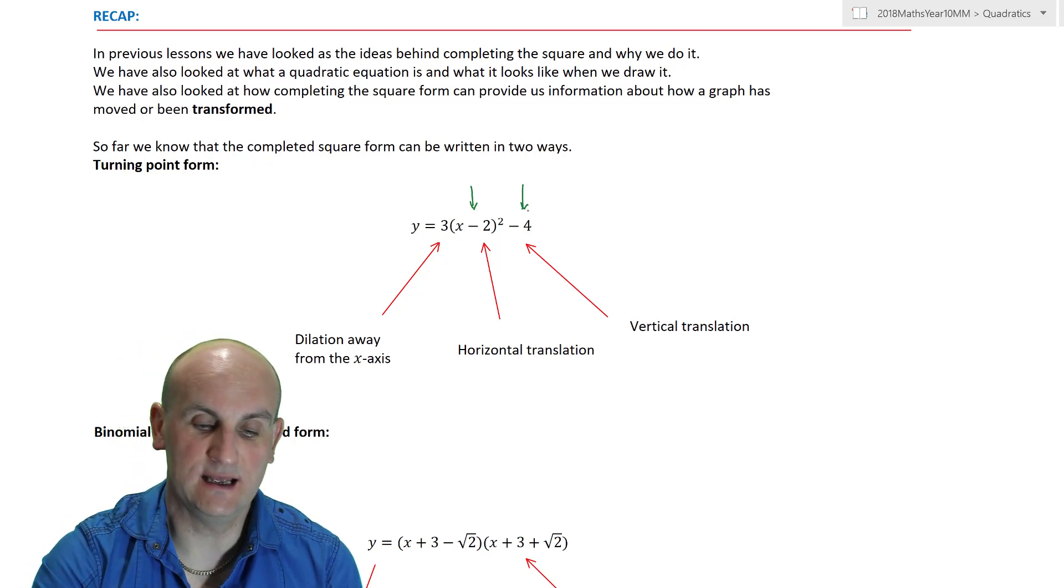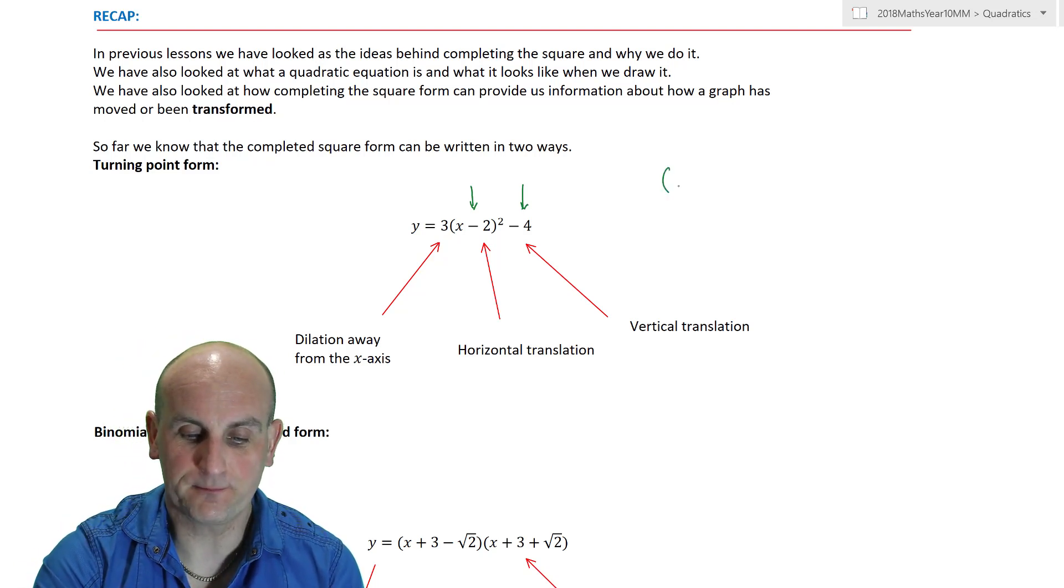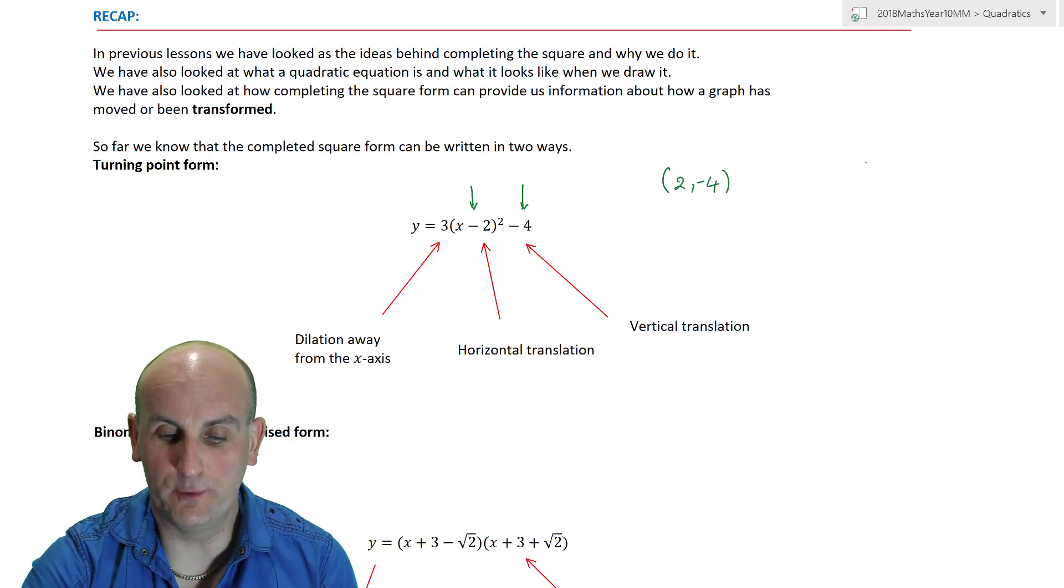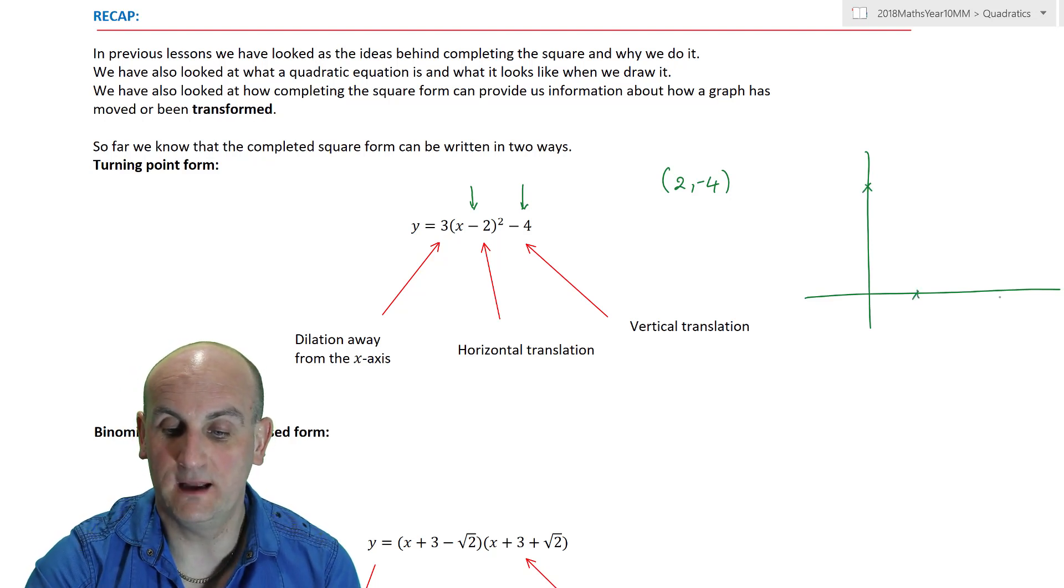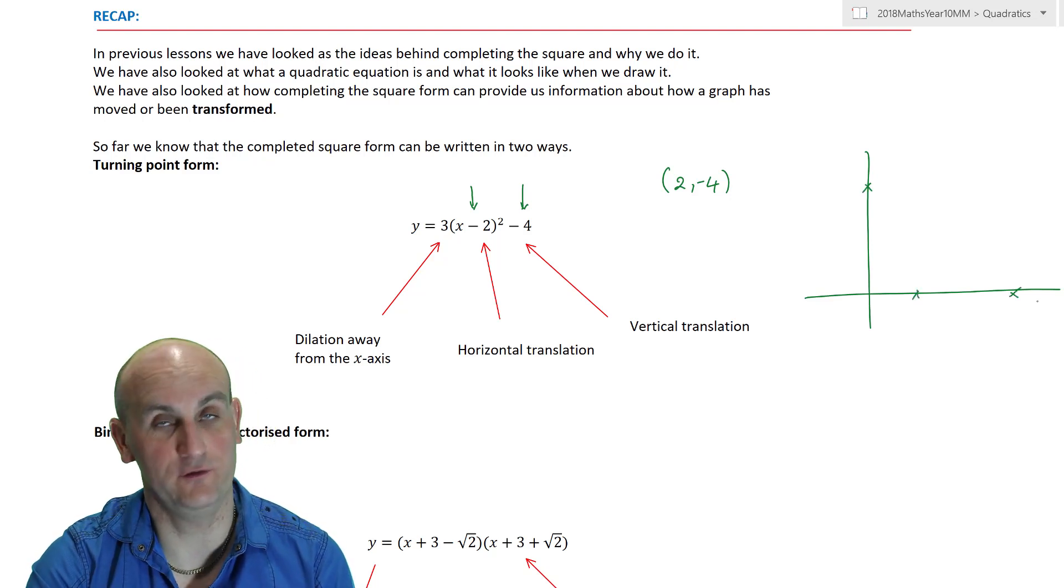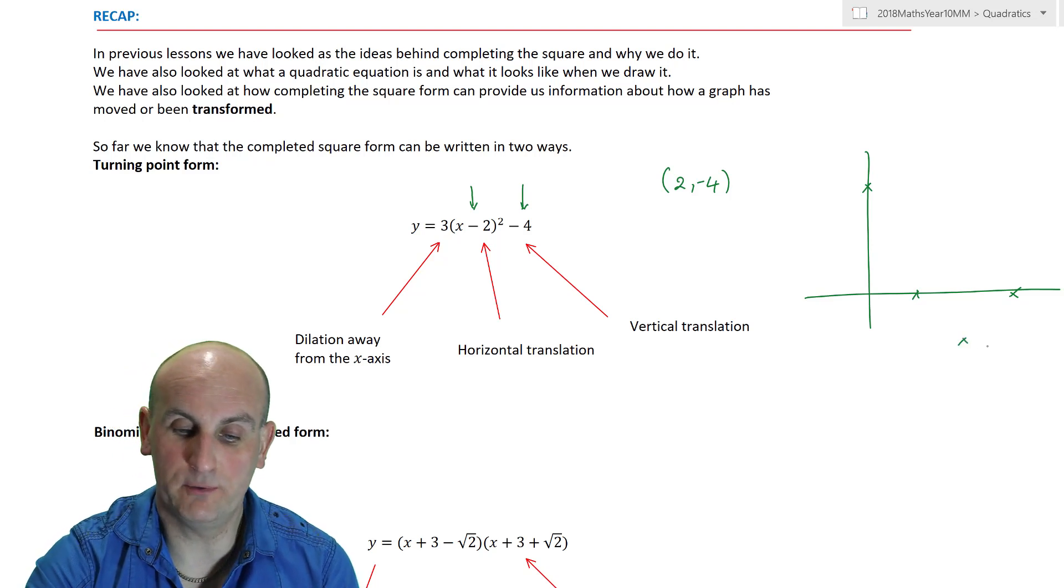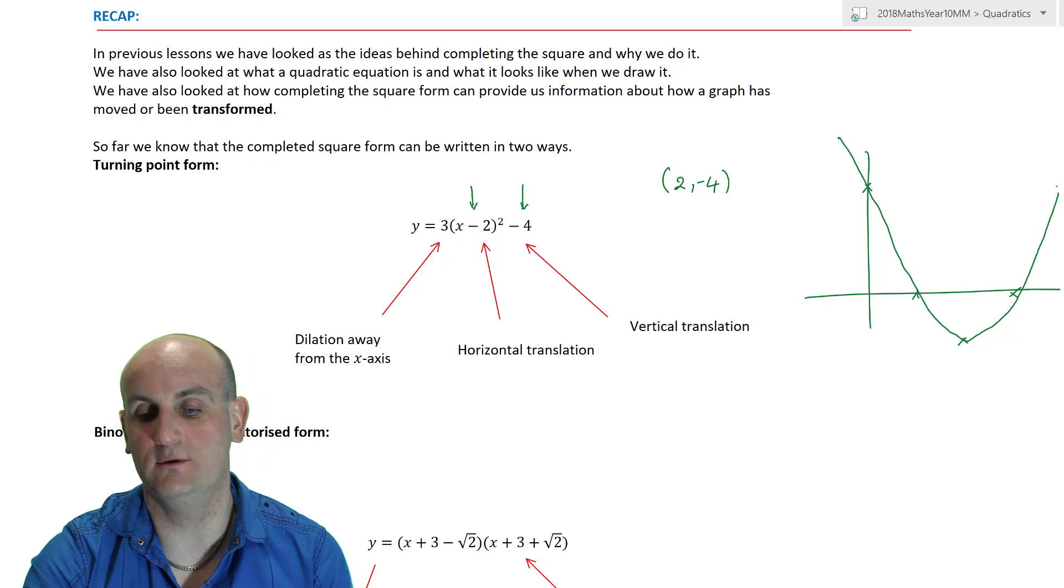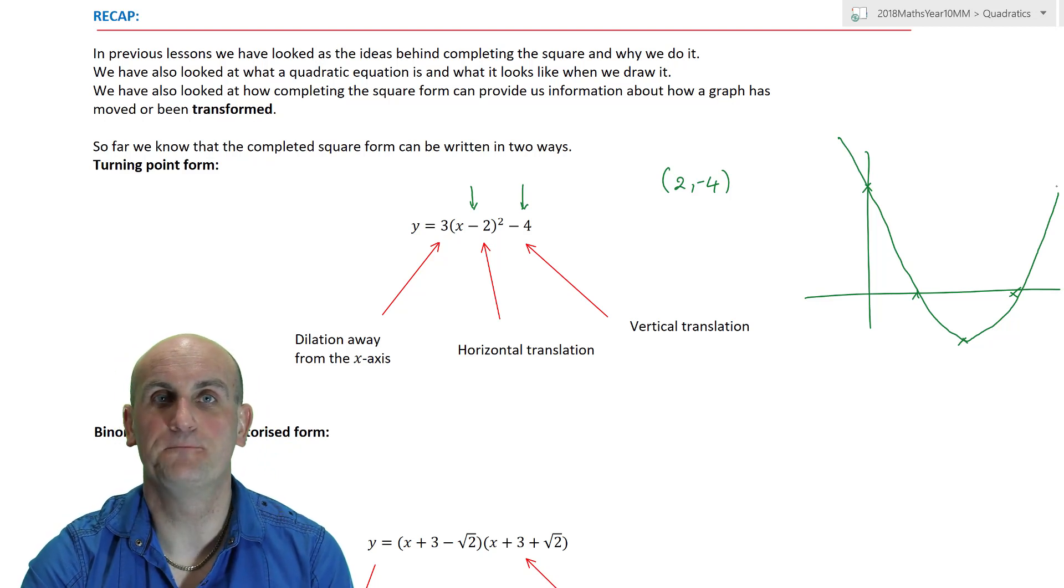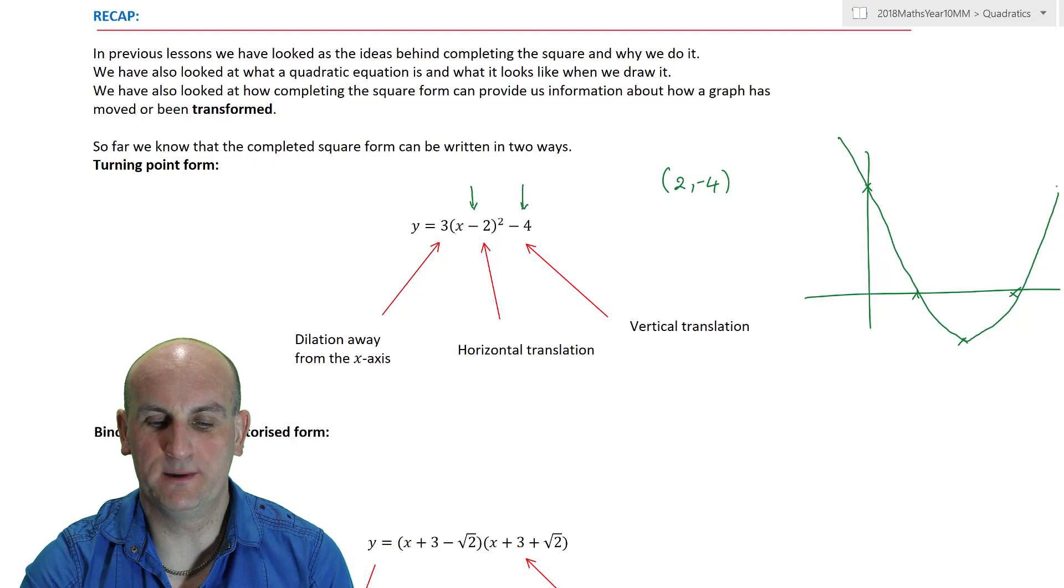Using that, I can say that for this particular equation, my turning point would be 2, negative 4. Why is that important to me? Well, sketching a graph is great. If I know my y-axis intercept, my 2 x-axis intercepts, assuming they have them, and my turning point, I can now draw the most beautiful curve to show where the most important pieces are. That's a sketch, all right?